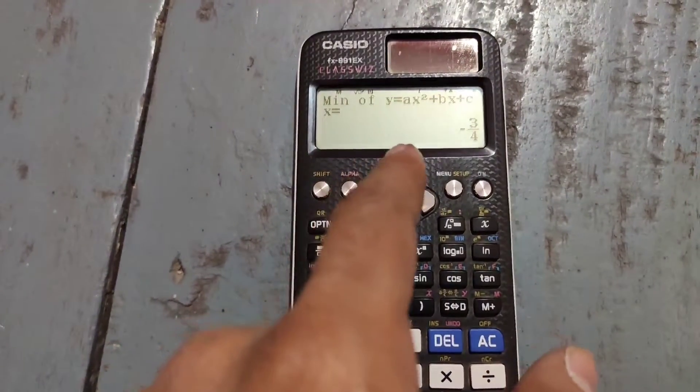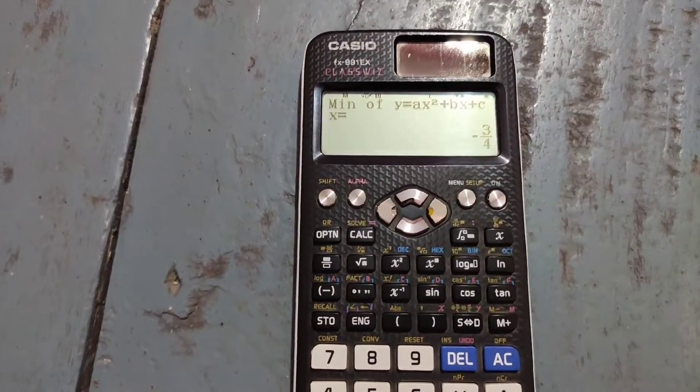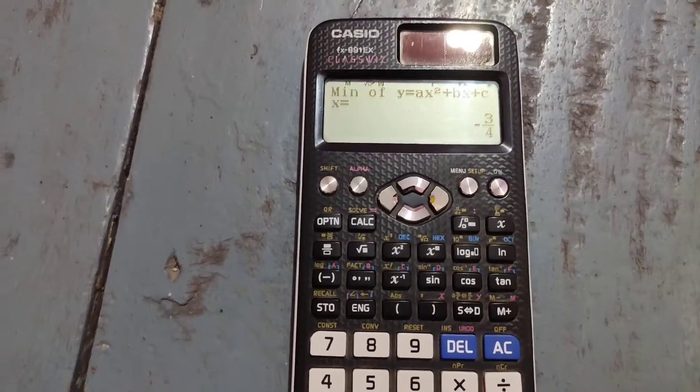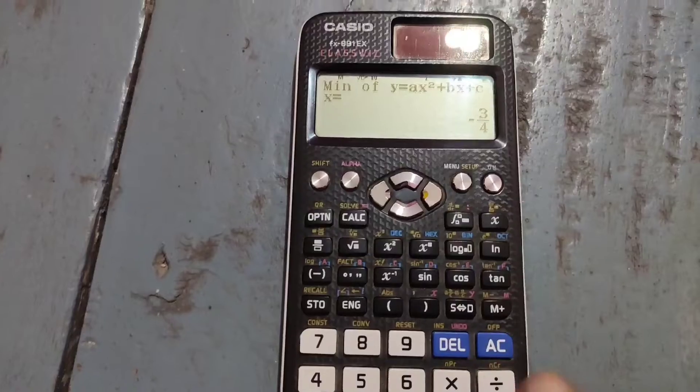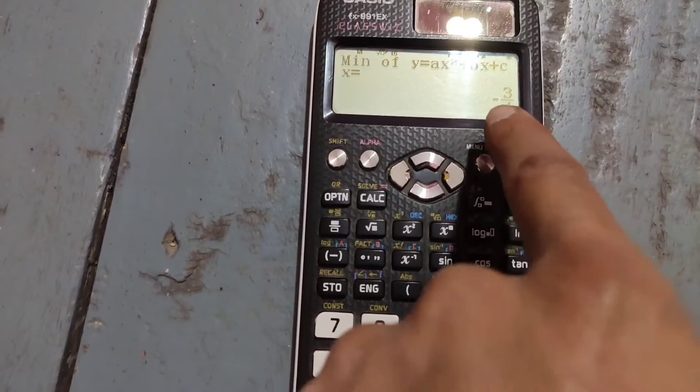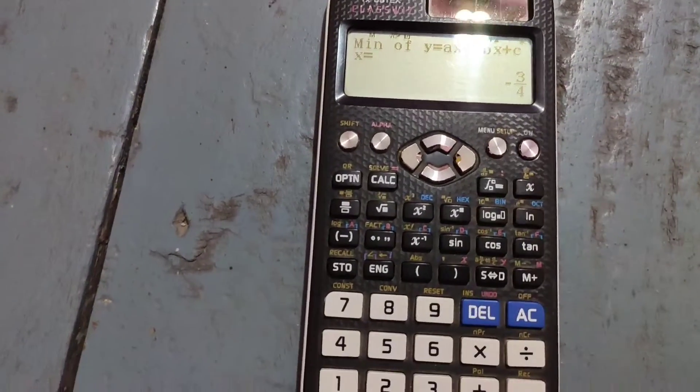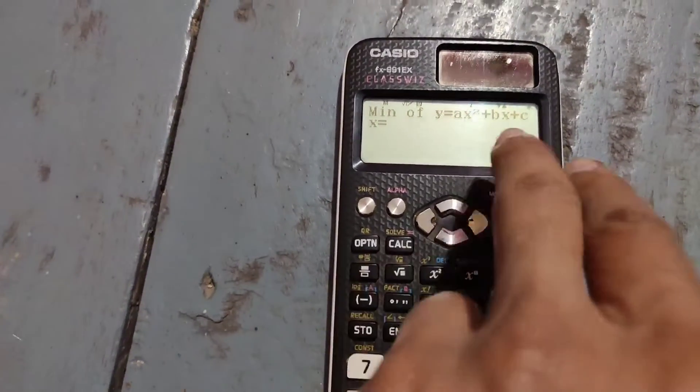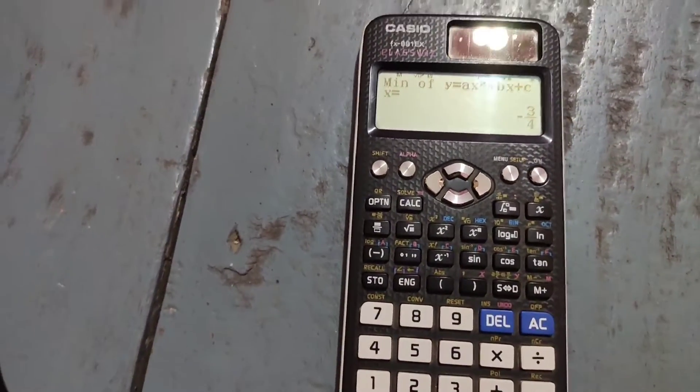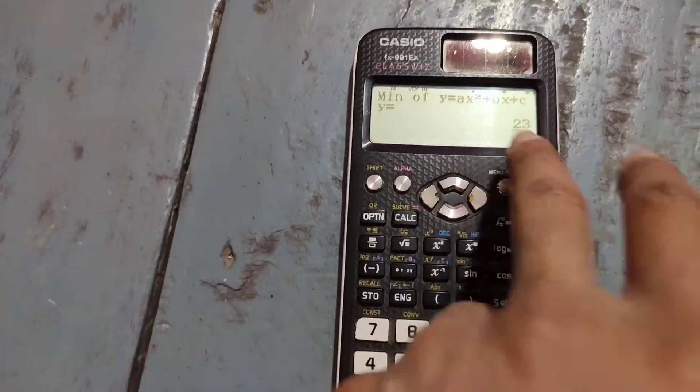Now it is giving me the value of x when the expression—not the equation—Ax² + Bx + C (which is 2x² + 3x + 4) has the minimum value. When x equals -3/4, the minimum value of 2x² + 3x + 4 is 23/8.